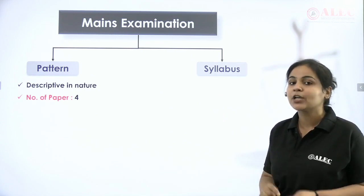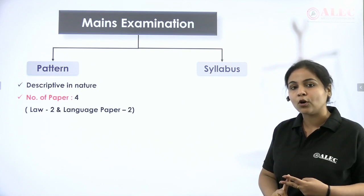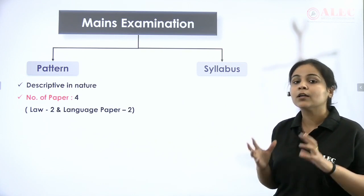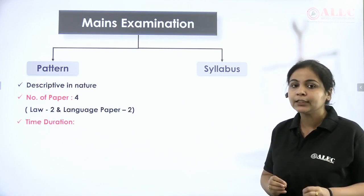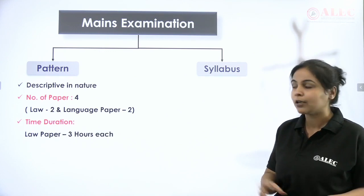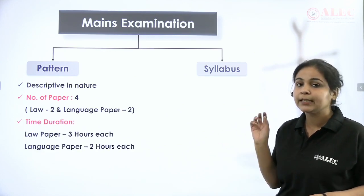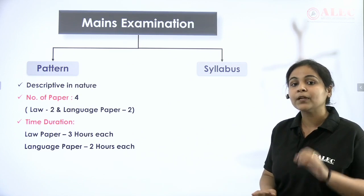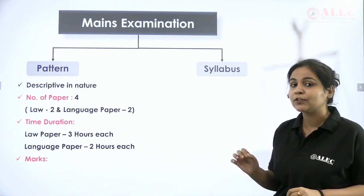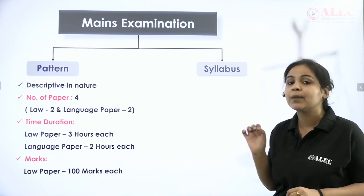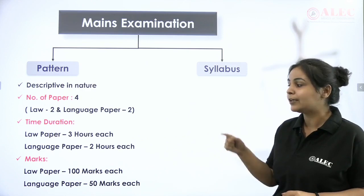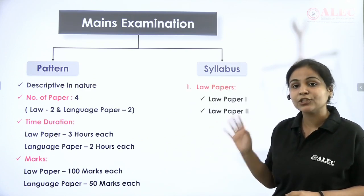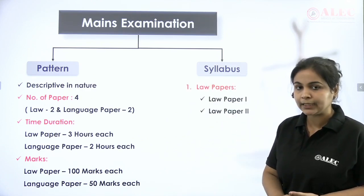Total mains papers are 4. Two papers are law and two papers are language. For law papers, you will get 3 hours to write, and for language papers you will get 2 hours. Law papers are 100 marks each and language papers are 50 marks each. So 100 + 100 + 50 + 50 — the main examination will be 300 marks in total.